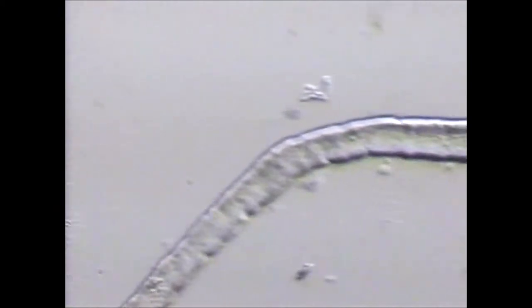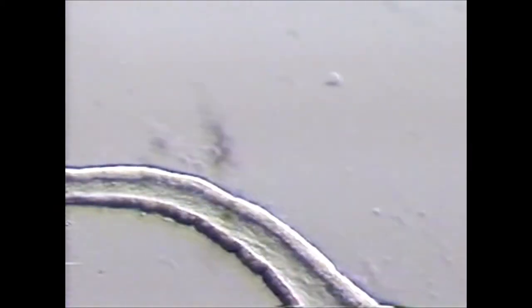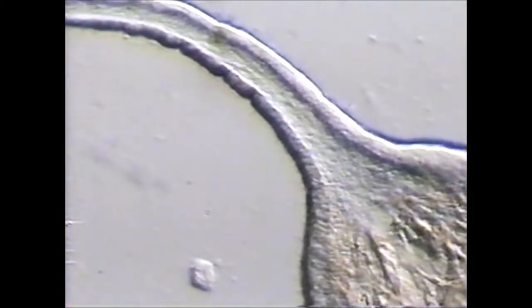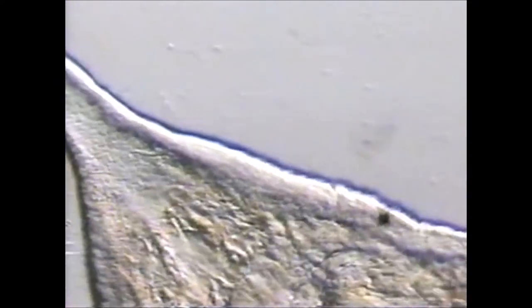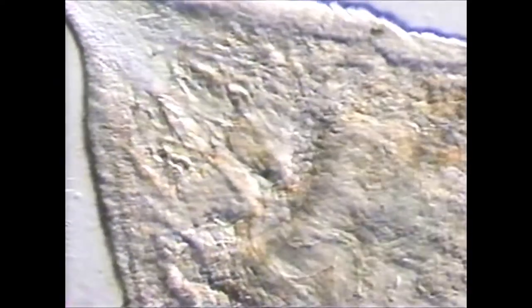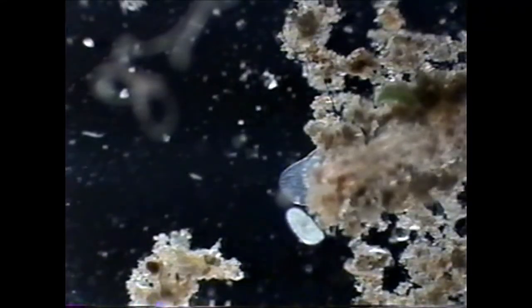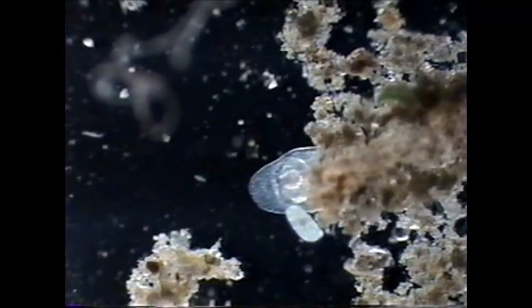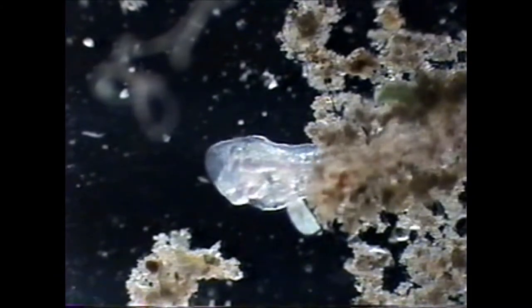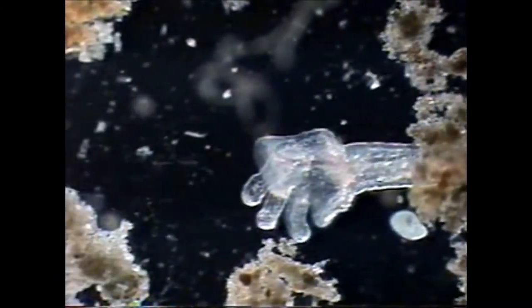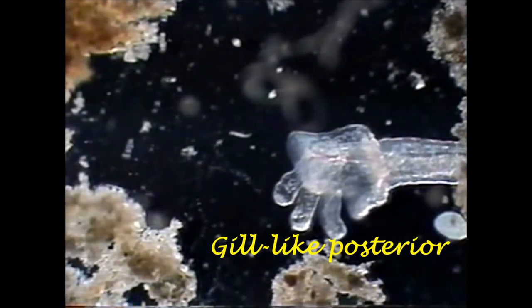This segmented worm has a long proboscis or tubular mouth part. This one has a hand-like structure at the posterior end of the worm which functions as gills for respiration.